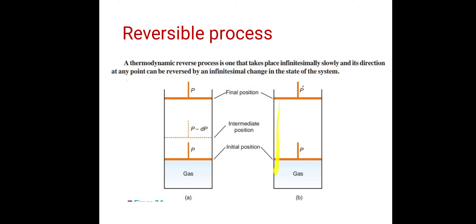Consider the second diagram. Again this is a cylinder containing gas, fitted with a weightless and frictionless piston. Now if we decrease the pressure on this piston suddenly — in the first case we decreased pressure slowly, but here we decrease it suddenly — the piston goes directly to the final position above. This change cannot be reversed, because we have suddenly decreased the pressure.